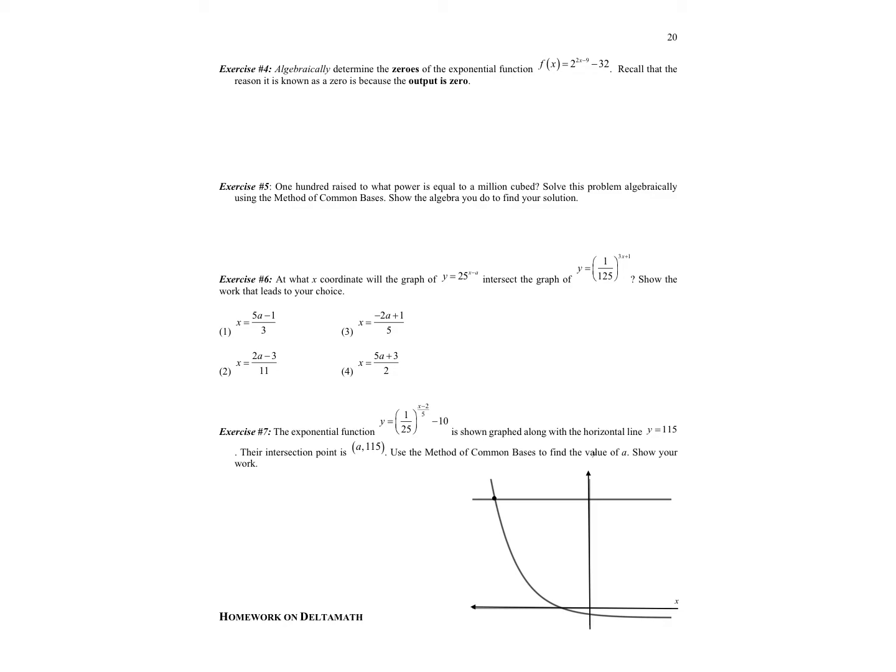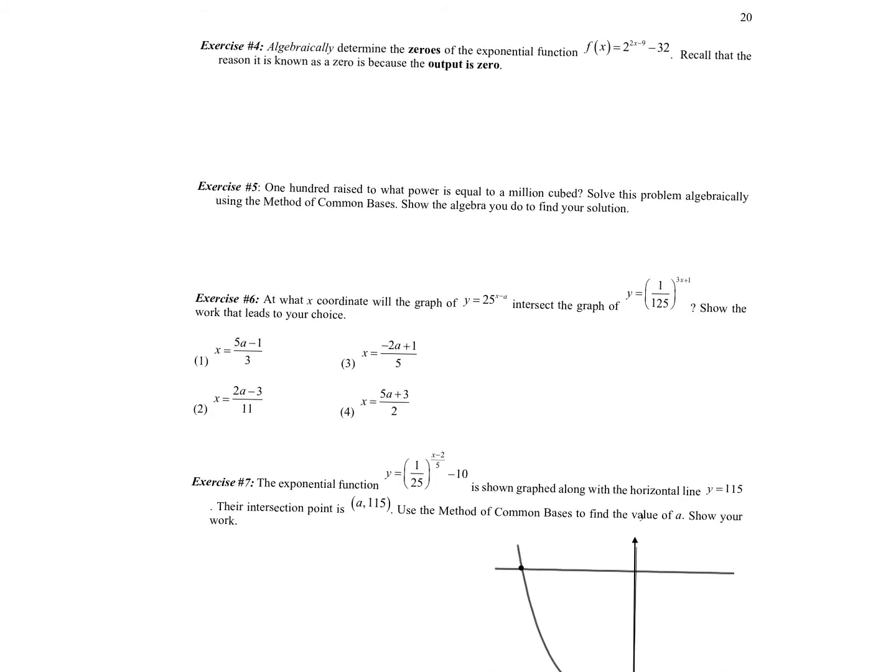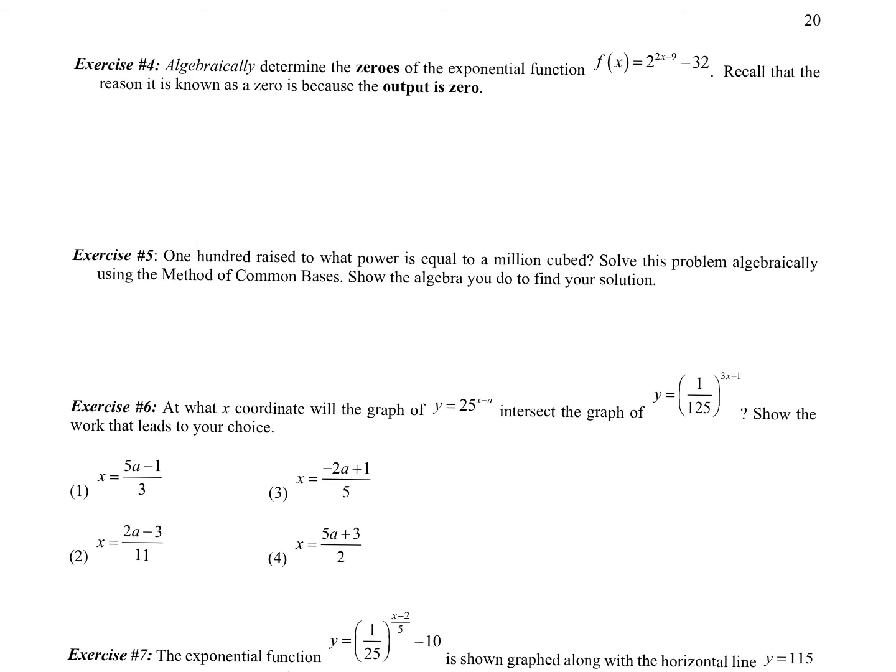The next one says algebraically determine the zeros of the exponential function. We're trying to find the x intercepts. When we have an x intercept, the y value is zero, which means I can plug in zero for f of x. So here is our resulting equation. If we have addition or subtraction, we're going to move that first. So I'm going to move the 32 to the other side. Now we can notice that 2 and 32 are both powers of 2.